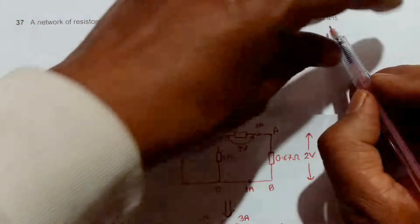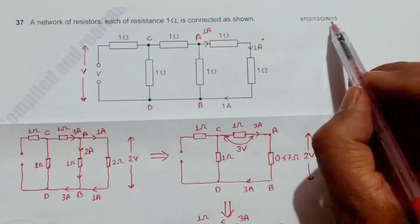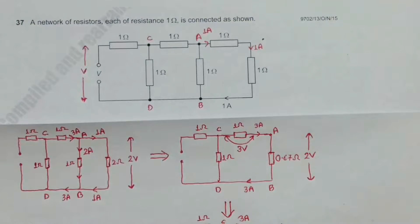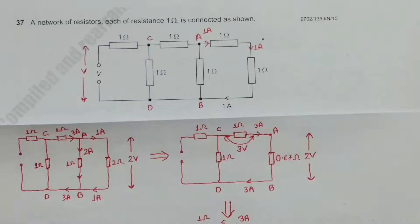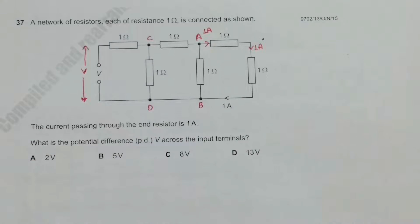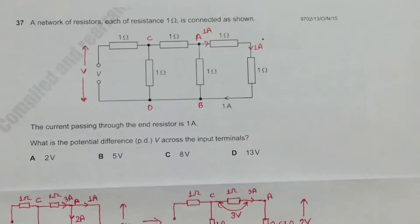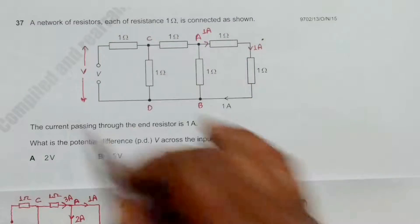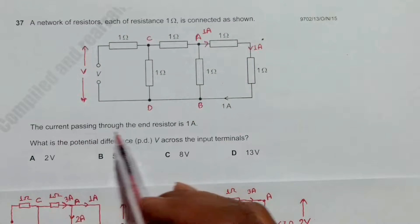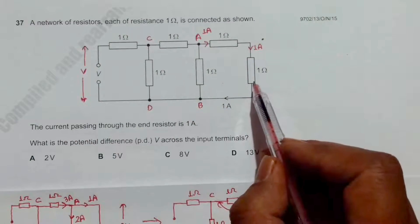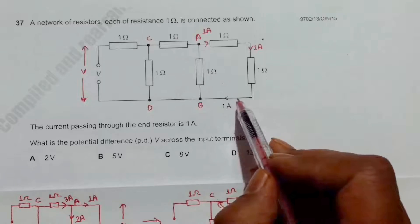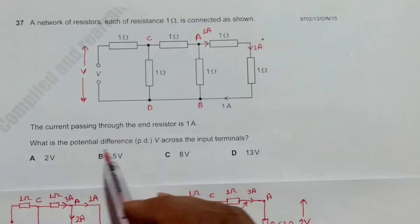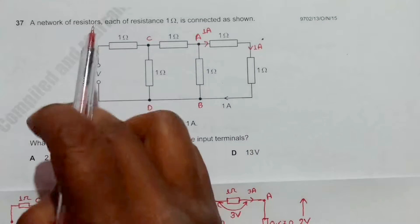This is question 37 from the 2015 October/November Paper 1 3. The question reads: a network of resistors, each of resistance 1 ohm, is connected as shown. The current passing through the end resistor is 1 ampere. What is the potential difference V across the input terminals?